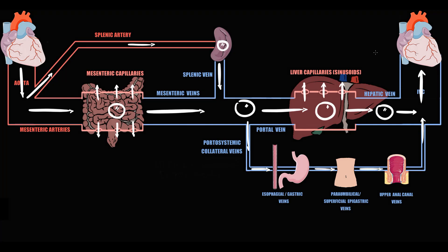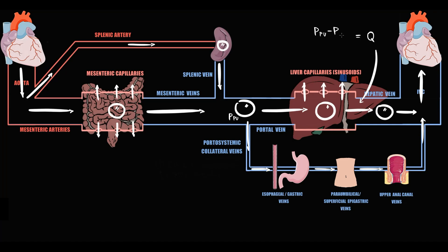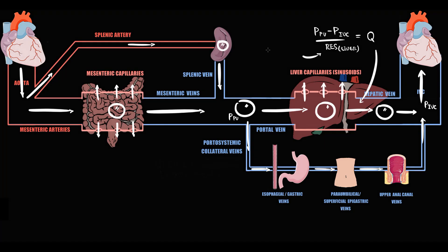We also have to know that flow from the portal vein through the liver into the inferior vena cava equals the pressure inside the portal vein minus the pressure inside the inferior vena cava, divided by the resistance between them — which is the resistance in the liver blood vessels. Resistance is inversely proportional to the fourth power of radius.